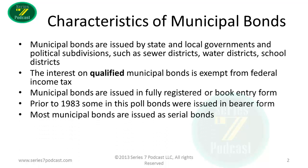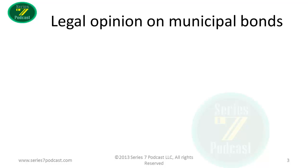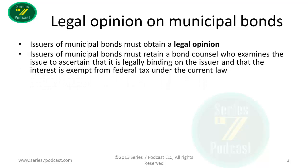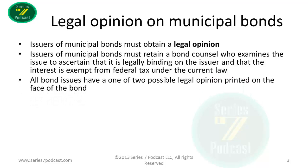Most municipal bonds are issued as serial bonds, which we've talked about in past video episodes. Every municipal bond must have a legal opinion. The issuers retain a lawyer called a bond counsel who examines the issue, makes sure it's legally binding, and that the interest is exempt from federal tax under current law. That bond counsel will issue one of two possible legal opinions, which will be printed on the face of the registered bond or on the bond indenture if it's a book entry bond.